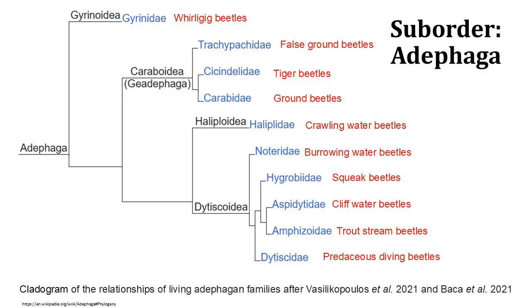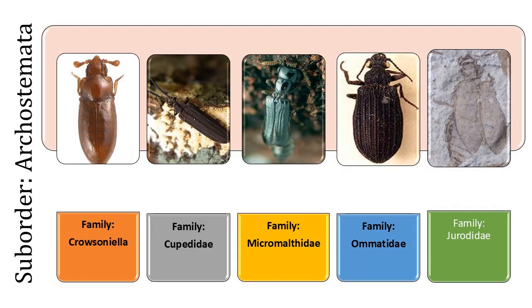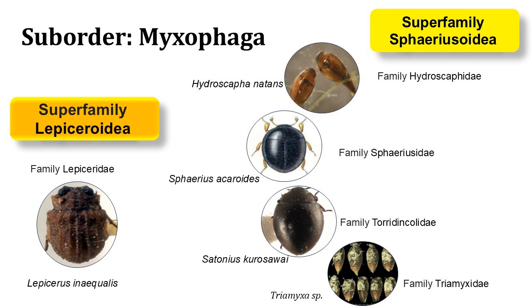Adephaga, comprising 10 families of mainly predatory beetles, includes the ground beetles and water beetles. Archostemata, with 4 families, primarily consists of wood-eating beetles like the reticulated beetles. Myxophaga contains about 65 species in 4 families, including small beetles such as those in the Hydroscaphidae family and the genus Cephyrus. They all primarily feed on algae.